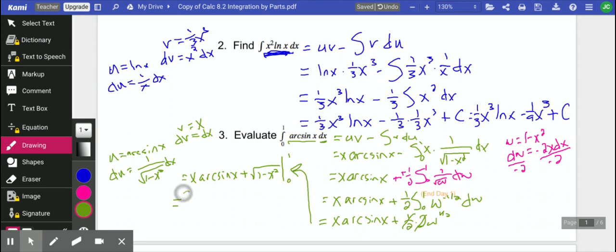So first, we're going to plug in 1. So we have 1 arc sine of 1. That's going to be pi over 2. So pi over 2 plus the square root of 0 minus, and then we're going to plug in 0. So that's just going to be 0 plus the square root of 1.